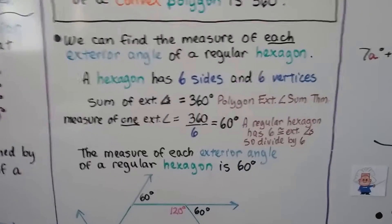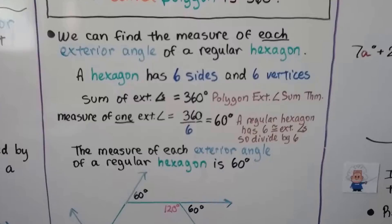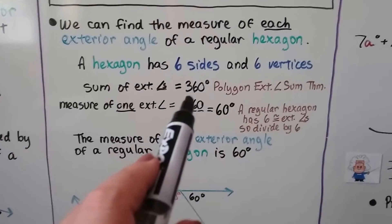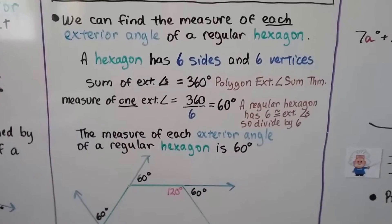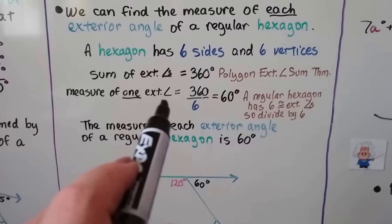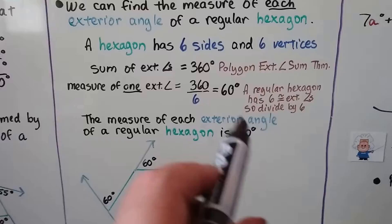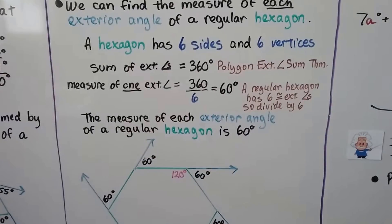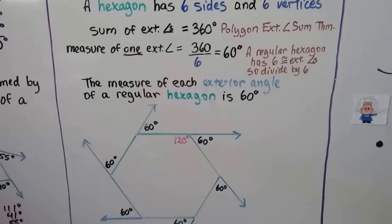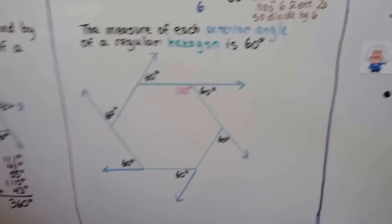We can find the measure of each exterior angle of a regular hexagon. A hexagon has six sides and six vertices. The sum of the exterior angles would equal 360 degrees. That's our theorem. Measure of one exterior angle would equal 360 divided by six because there's six sides and six vertices. So a regular hexagon has six congruent external angles, so we divide by six. And the measure of each exterior angle of a regular hexagon is 60 degrees.